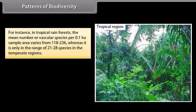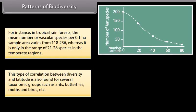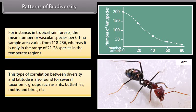For instance, in tropical rainforests, the mean number of vascular species per 0.1 HA sample area varies from 118 to 236, whereas it is only in the range of 21 to 28 species in temperate regions. This type of correlation between diversity and latitude is also found for several taxonomic groups such as ants, butterflies, moths, and birds, etc.